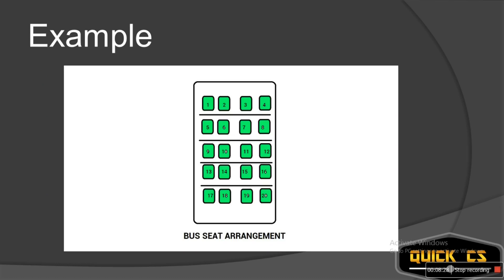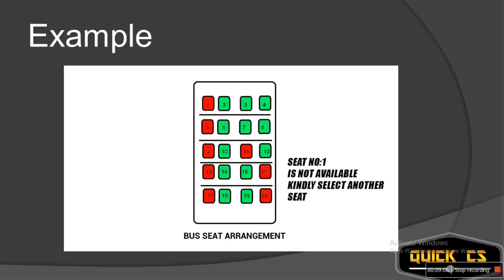Let's look at an example. Suppose you are trying to book a ticket on an online ticket booking website for a bus. This is the seating arrangement for the bus and all seats are available when you go. You decide to come back after 5 minutes to book — when you return, some seats shown in red have already been booked. You decide to book seat number 1 and select it. At the same time, someone else also comes online and wants to book seat number 1 as well. But the system won't allow it — it will show seat 1 is not available, kindly select another seat. You have just selected the seat but haven't completed the booking, and still the other user won't be able to select the same seat as you.